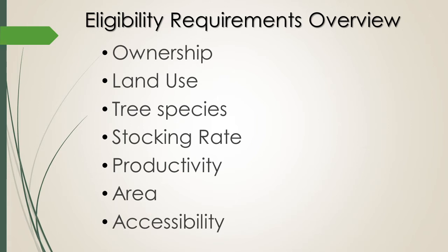Within that, if there is a conservation easement that precludes logging but does not prohibit all harvest of timber, that land is still going to be classified as forest land. The land use must be forest land use; however, within that parcel there can also be agricultural, commercial, residential, or other uses. It is a matter of whether that forest portion meets the other requirements, but it does have to have the use of forest in order to get the forest classification.